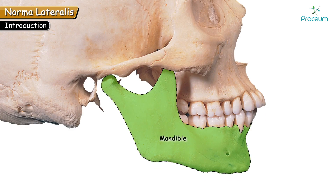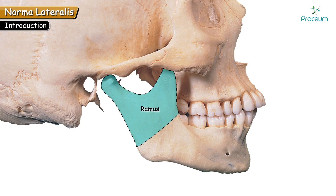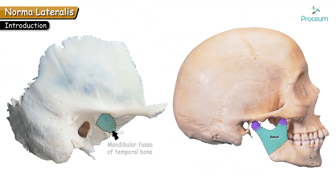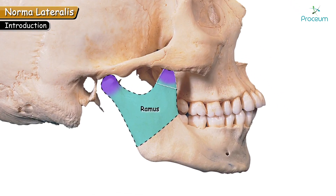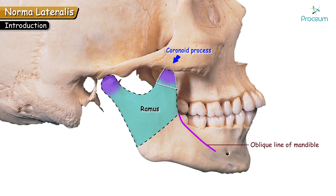In this view, the parts of the mandible seen are the ramus and part of the body. The ramus has two processes: the condylar process and the coronoid process. The condylar process is the posterior process, having a head and neck. The head of the condylar process articulates with the mandibular fossa to form the temporomandibular joint. The triangular projection present anteriorly is the coronoid process. Tracing the anterior margin of the coronoid process along the ramus continues down over the body of the mandible as the oblique line of the mandible.